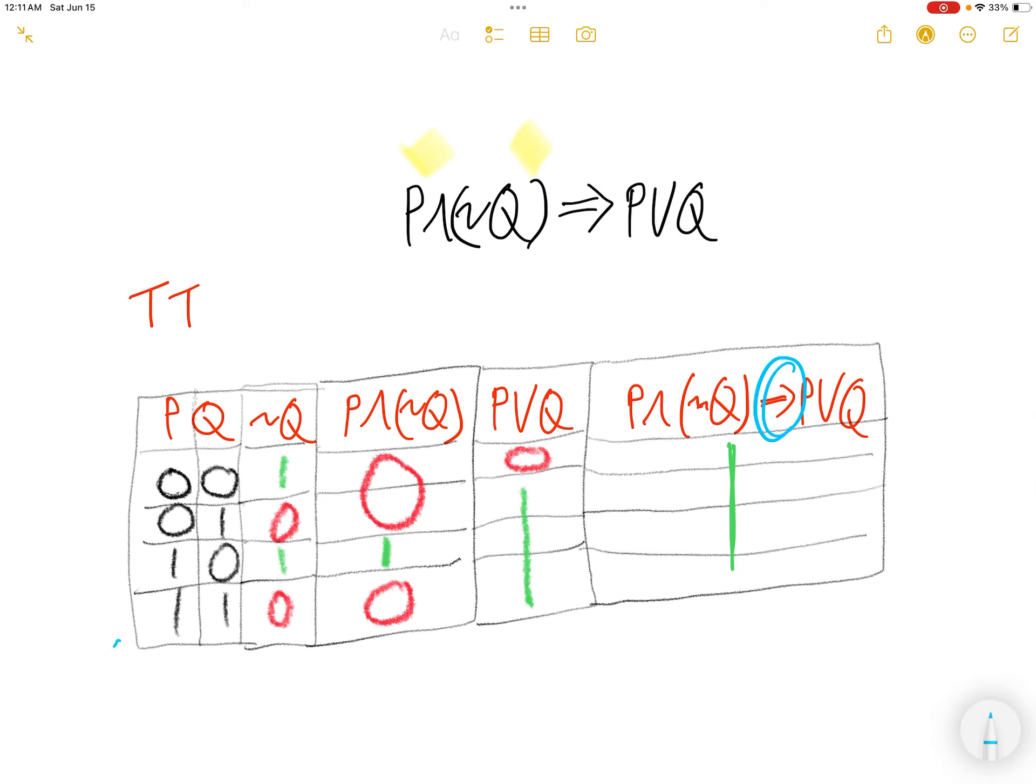Last one. Implication. For implication, you need to check. You need to check. 1 implies 0. The answer, true implies false is false. If you can see this to be false, then it's good. 1 implies 0 is false. Okay?